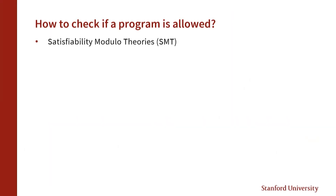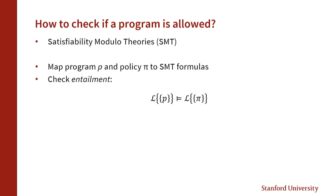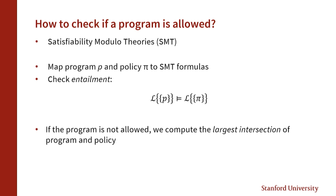How do we check if a program is allowed? At a high level, we use satisfiability modulo theories (SMT), an algorithm to check if two logical formulas are entailed. We map both the program and the policy to SMT logical formulas and check if they are entailed. Furthermore, if the program is not entirely allowed, we can use SMT to compute the largest intersection of the program and the policy. This algorithm gives a formal guarantee that whatever we execute is actually allowed by the policy.